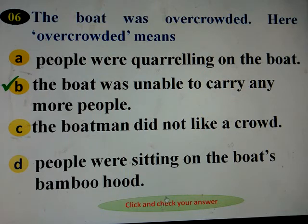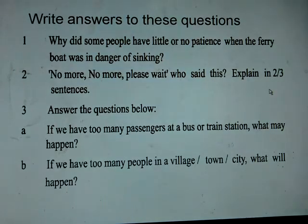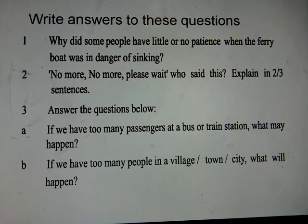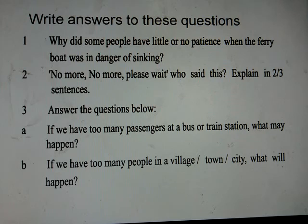We have looked at the six MCQ questions. Now let us see the homework. Write answers to these questions. In your book you will see three questions and you will write the answers at home. When our school reopens, we will solve these answers. Question one: Why did some people have little or no patience when the ferry boat was in danger of sinking? Question two: 'No more, no more, please wait' — who said this? Explain in two or three sentences. Question three: (a) If we have too many passengers at a bus or train station, what may happen? (b) If we have too many people in a village, town, or city, what will happen?